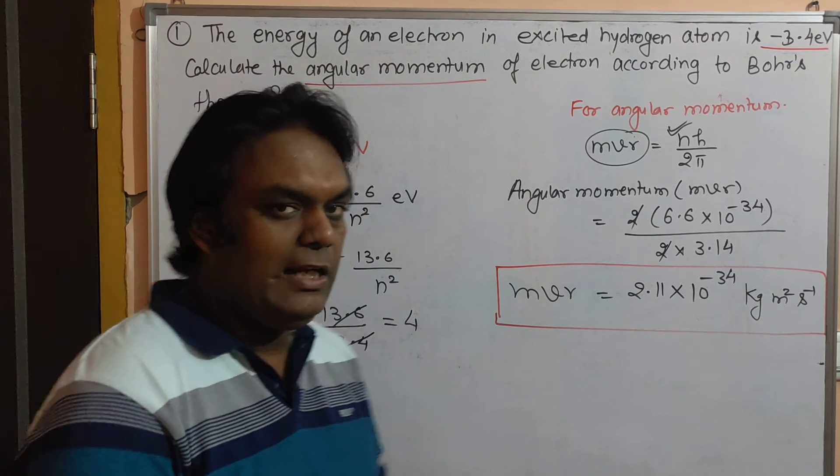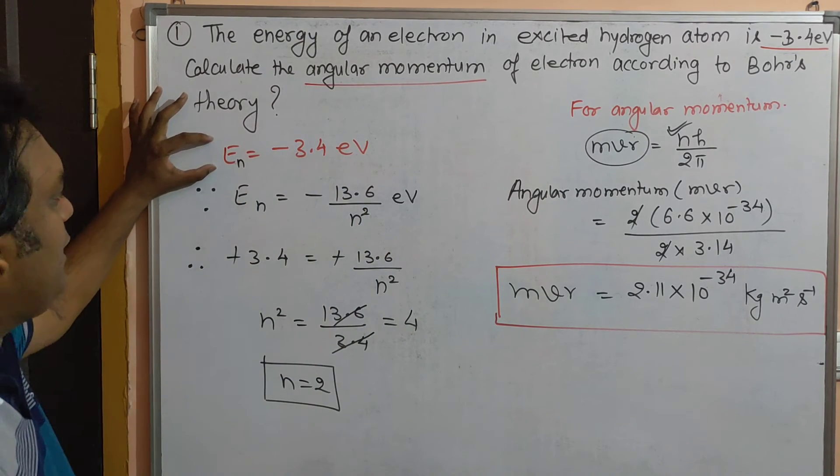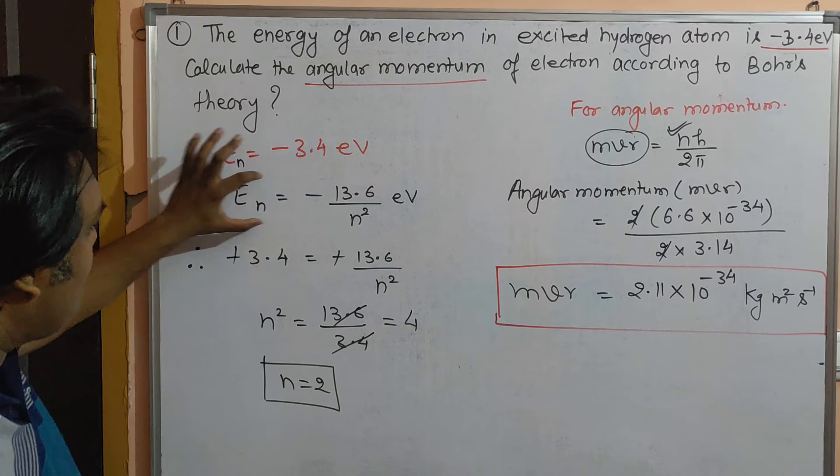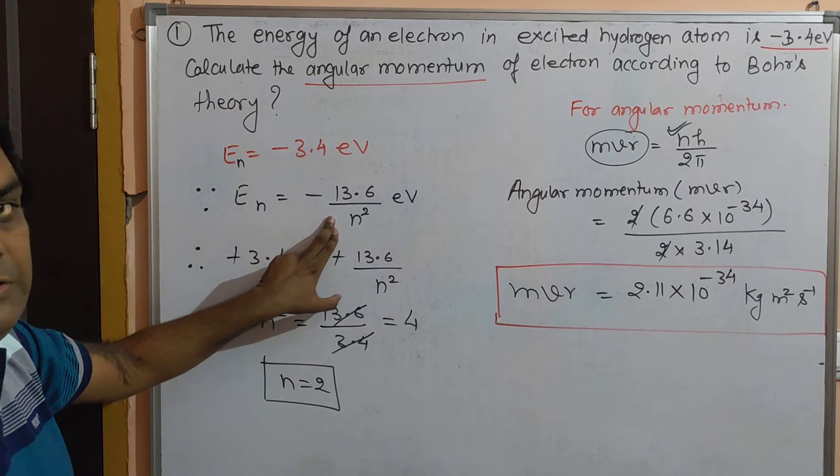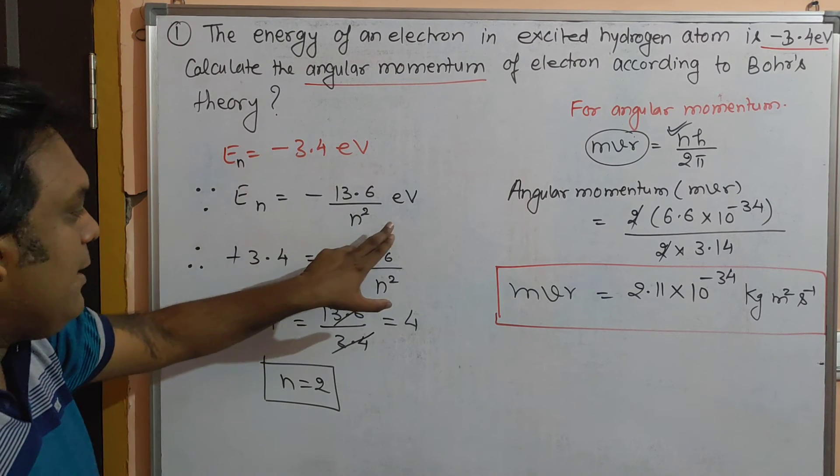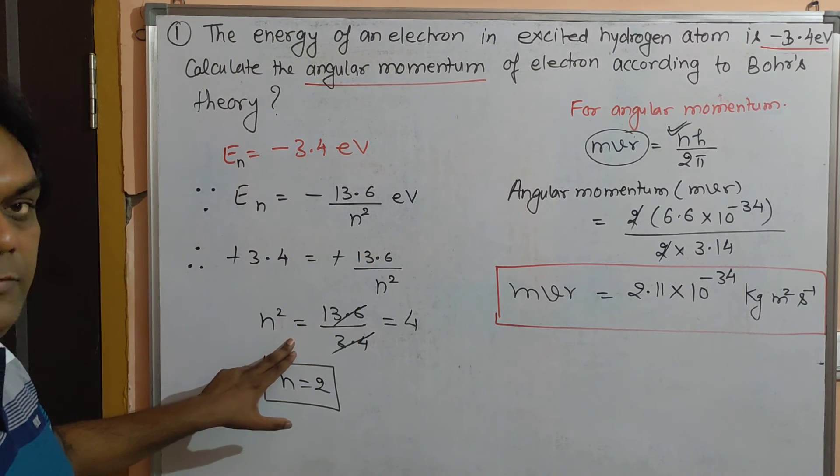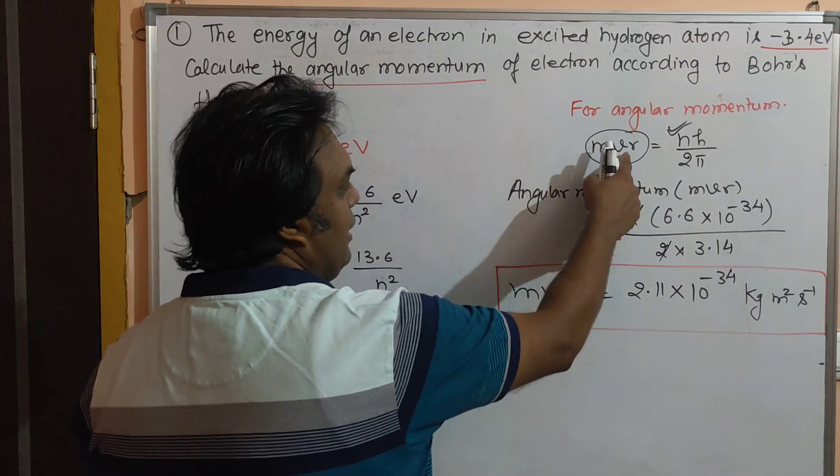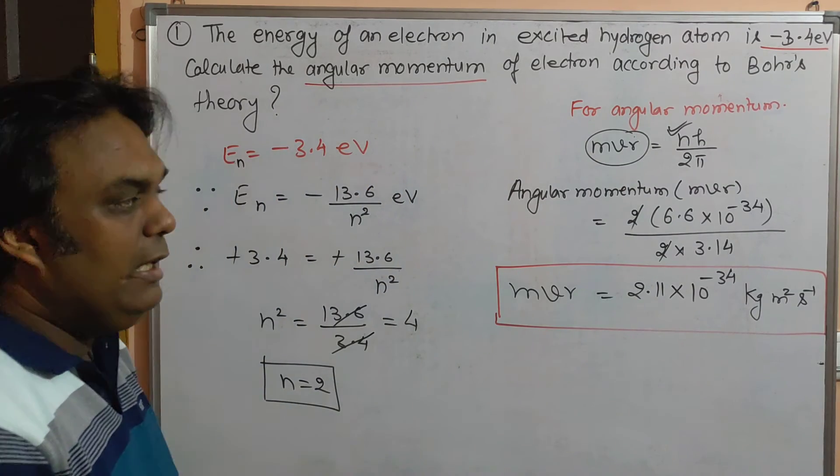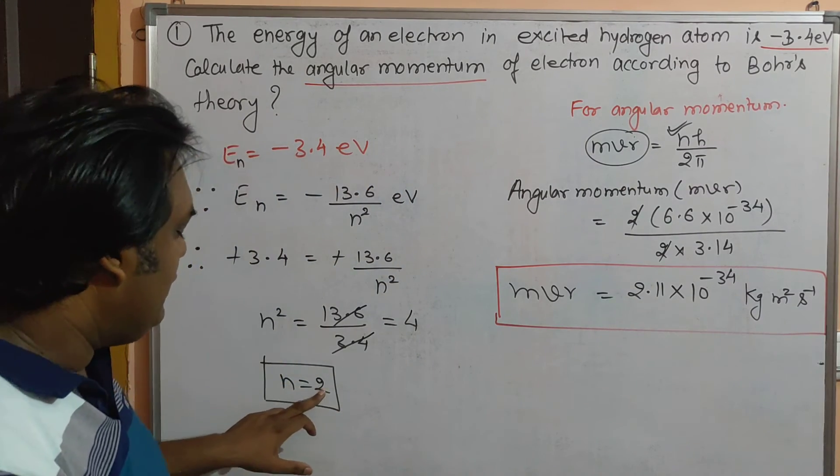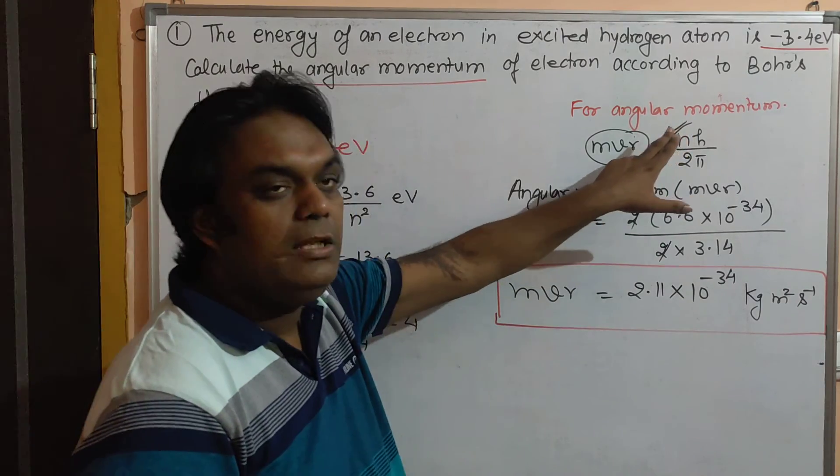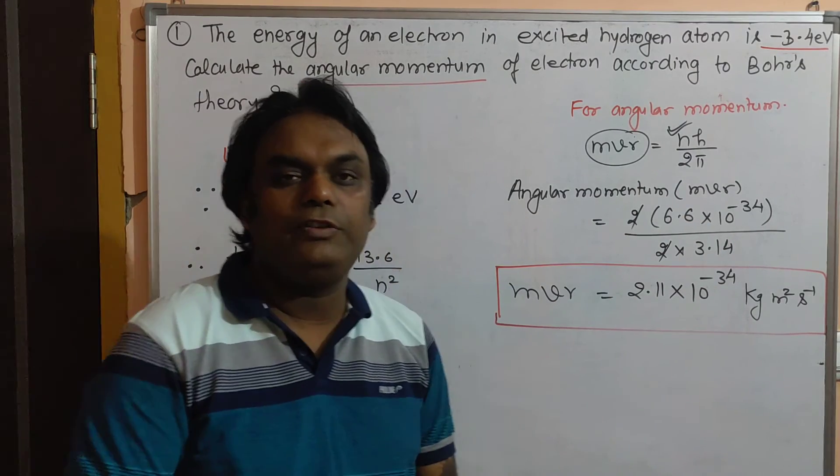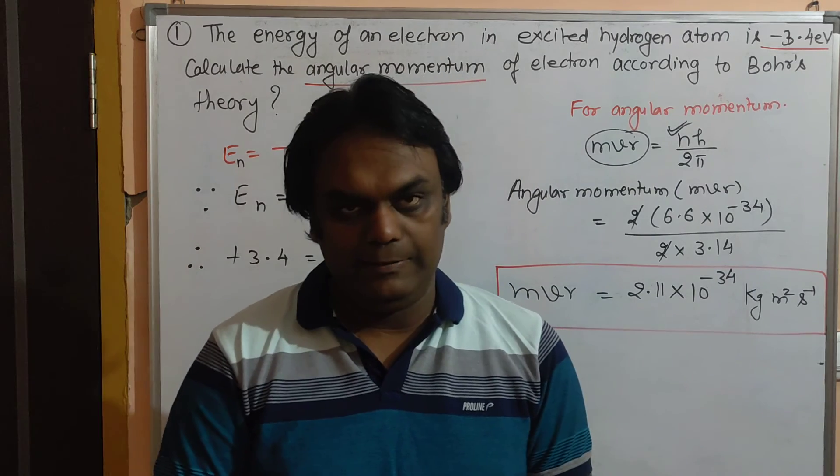I hope this is clear. To recap: the energy of the hydrogen atom electron in the excited state is given, so using the formula En = -13.6 upon n², we calculate n. From Bohr's theory, angular momentum equals n h upon 2π. Substituting the calculated value of n gives us the angular momentum of the electron in that excited state.